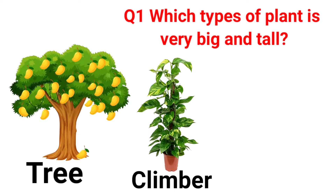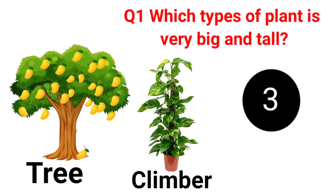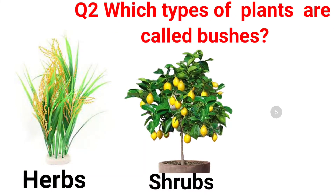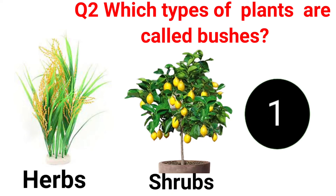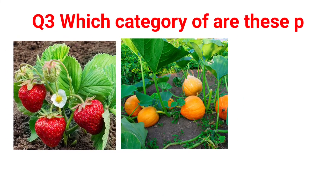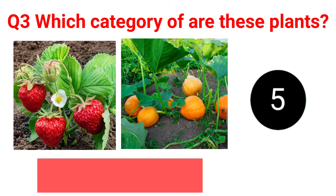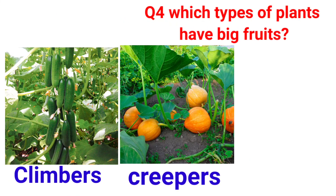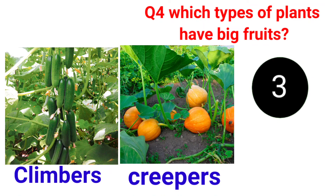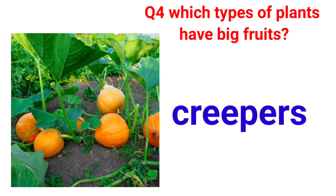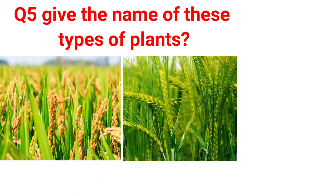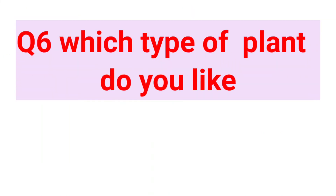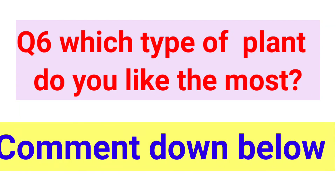Which type of plant is very big and tall? Which types of plants are called bushes? Which types of plants have big fruits? Answer: Creepers. Give the name of these types of plants. Answer: Herbs. Which type of plant do you like the most? Write a comment down below.